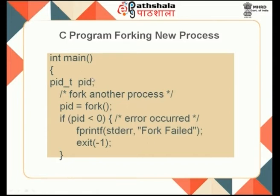As we saw earlier, the system call for creating a new process is the fork system call. In the main program — which is the parent process — the parent executes a fork system call. At the end of the fork, a new child process will be created. The fork system call returns two different values: one return value goes to the parent process and another goes to the child process.